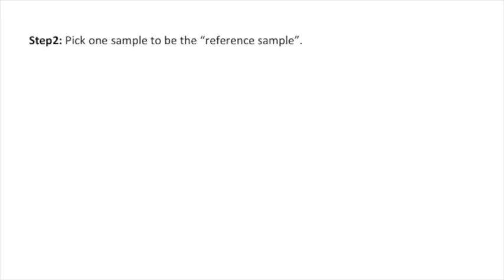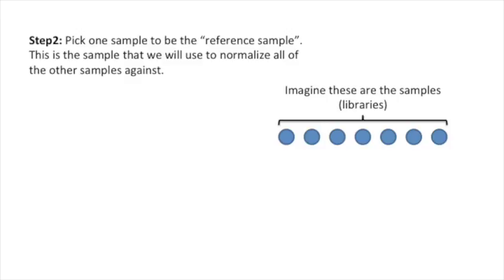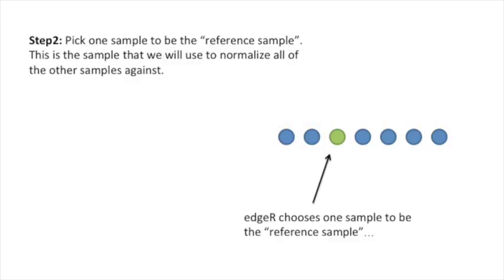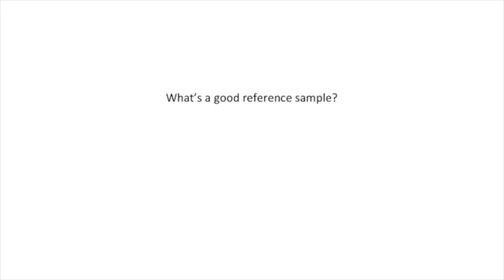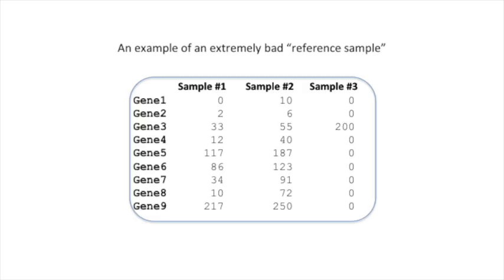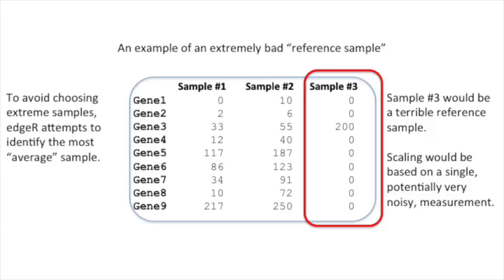Step 2: Pick one sample to be the reference sample. This is the sample that we will use to normalize all of the other samples against. EdgeR chooses one sample to be the reference sample and uses it to normalize all of the remaining samples. Here's a question: what's a good reference sample, and what's a bad reference sample? Here's an example of an extremely bad reference sample — Sample 3 would be a terrible reference sample, because scaling would be based on a single, potentially very noisy measurement. To avoid choosing extreme samples, EdgeR attempts to identify the most average sample.